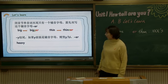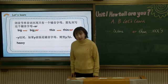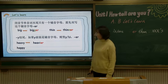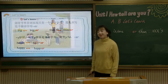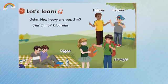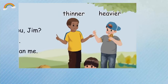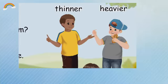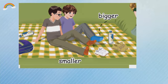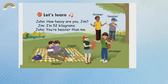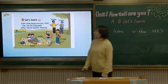比如说 Heavy 这个词 — Y的前面是辅音字母，因此变比较级：Follow me: heavier. Heavier. Happy — heavier. Let's see another cartoon. How heavy are you, Jim? I'm 52 kg. You're heavier than me. Heavier, heavier, heavier.